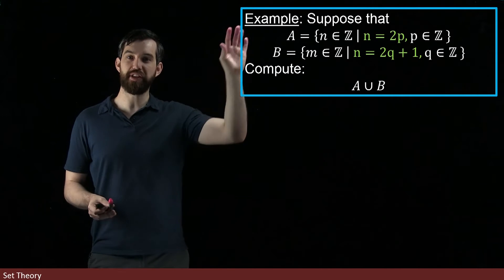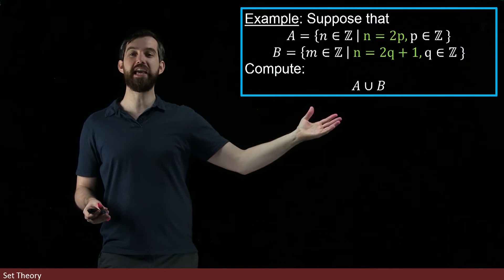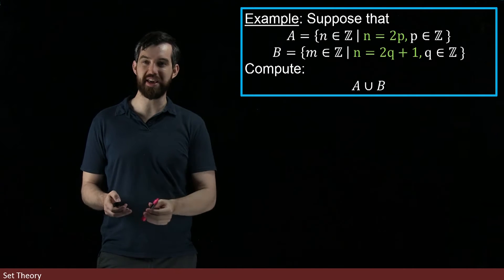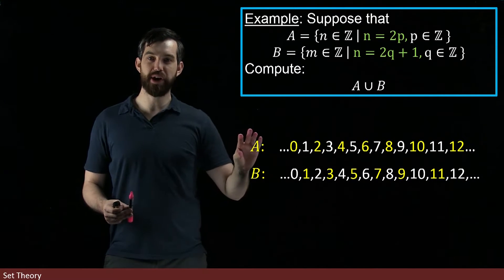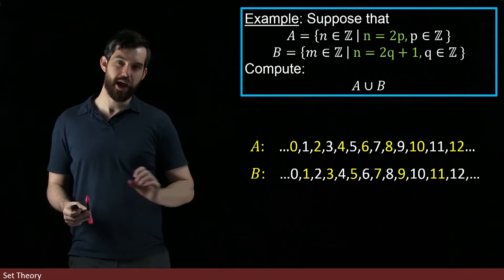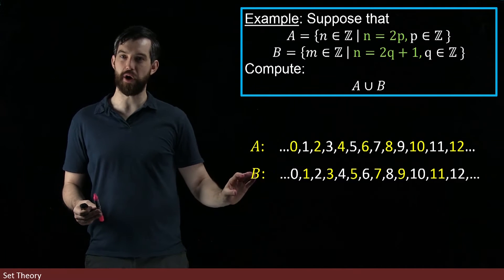So I've got the even integers as A, the odd integers as B. The question is what is A ∪ B? Well, let's do the same sort of heuristic that we had before. For A, I'm going to highlight all of the even integers. And for B, I'm going to highlight all of the odd integers.